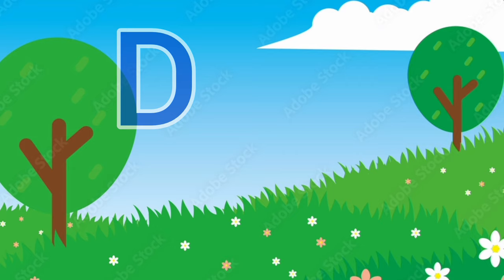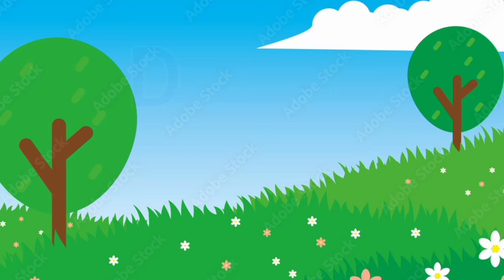D for donkey, donkey means gadha. E. E for elephant, elephant means hathi.